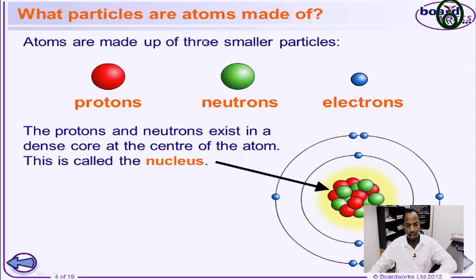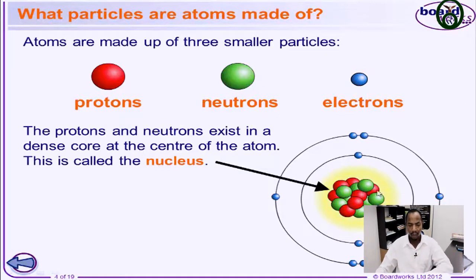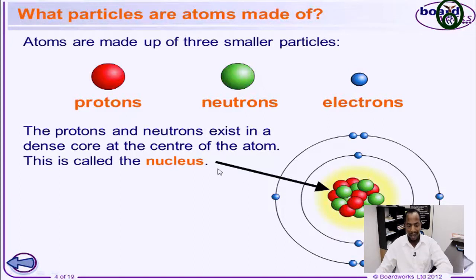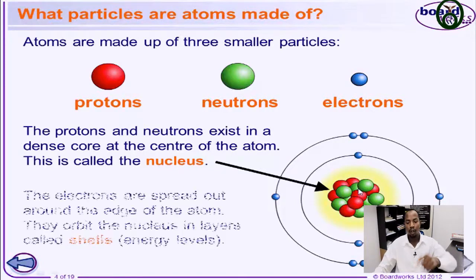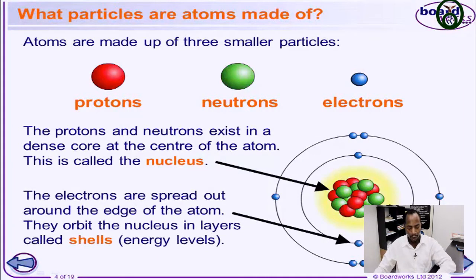The protons and the neutrons of an atom, where are they found? In the nucleus of the atom — because the atom is just like the cell we studied in biology. In the cell, we have a nucleus. So inside an atom, there is a nucleus. What is found in the nucleus of the atom? The protons and the neutrons are found in the nucleus of the atom, while the electrons revolve around the nucleus.